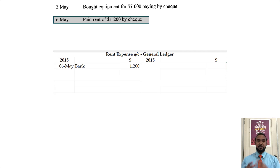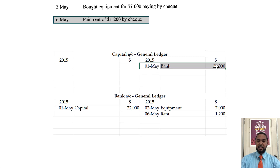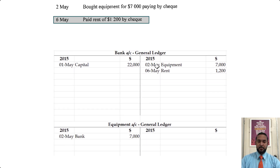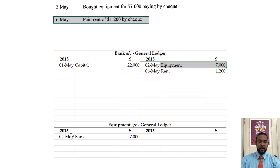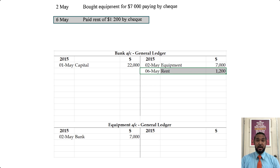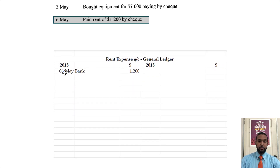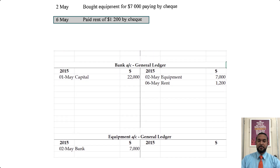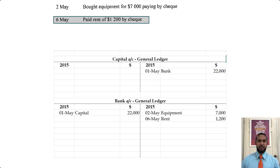When the owner started business, the money came from capital — so you credited where it came from and it went to bank, you debited where it went. When we bought the equipment, value came out of bank, you credited there and the value went to equipment, you debited where it's going. Same thing with the payment of rent — money came from bank, you credit where it came from and debit where it went. Just a disclaimer: that hack only works in some of these earlier transactions — for adjusting entries and closing entries, you need to be mindful of your double entry rules.